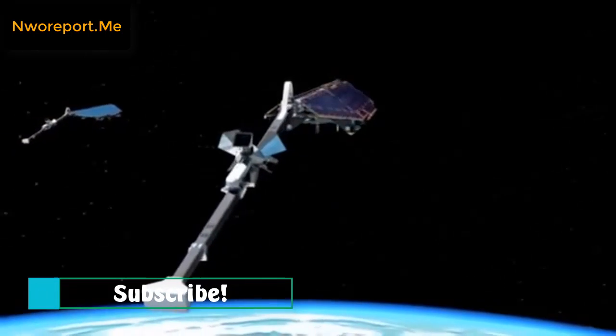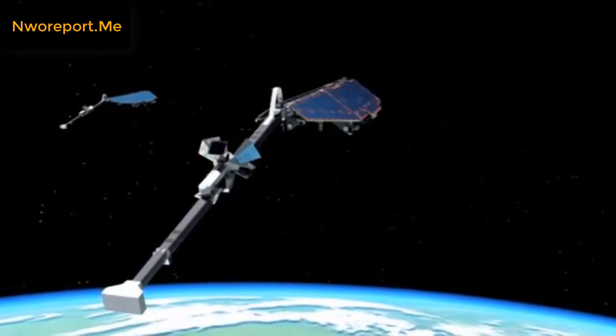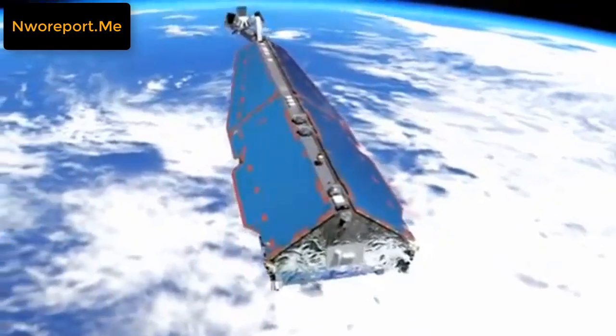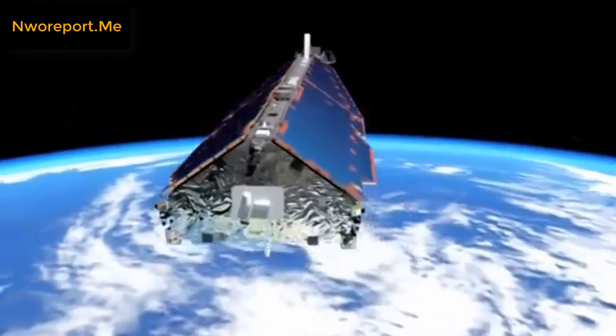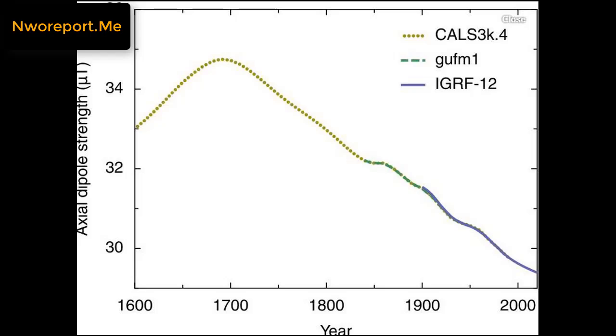Quote, it's well established that in modern times, the axial dipole component of Earth's main magnetic field is decreasing by approximately 5% per century. Recently, scientists using the swarm satellite announced that their data indicated that the decay rate is 10 times faster, or 5% per decade.